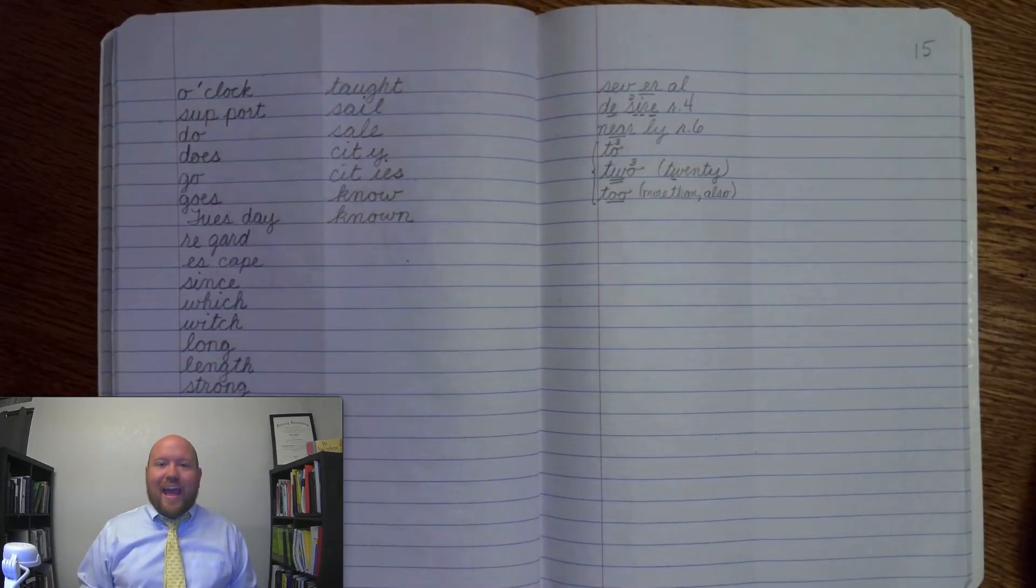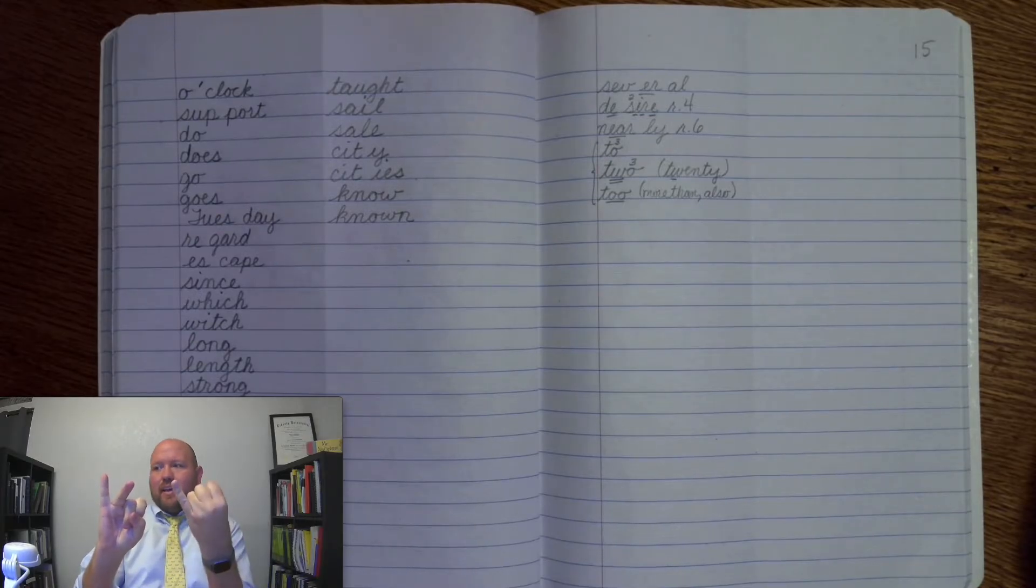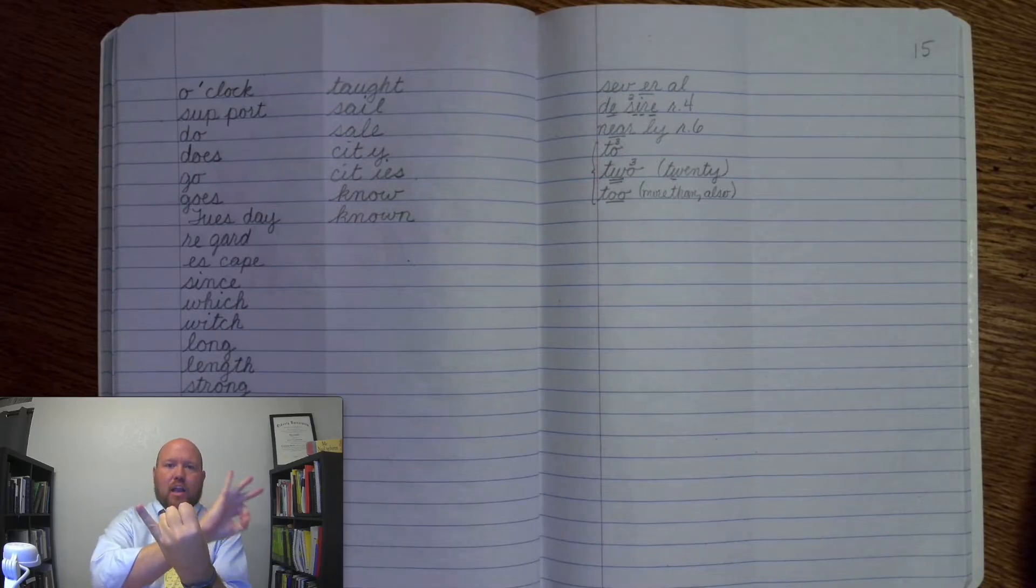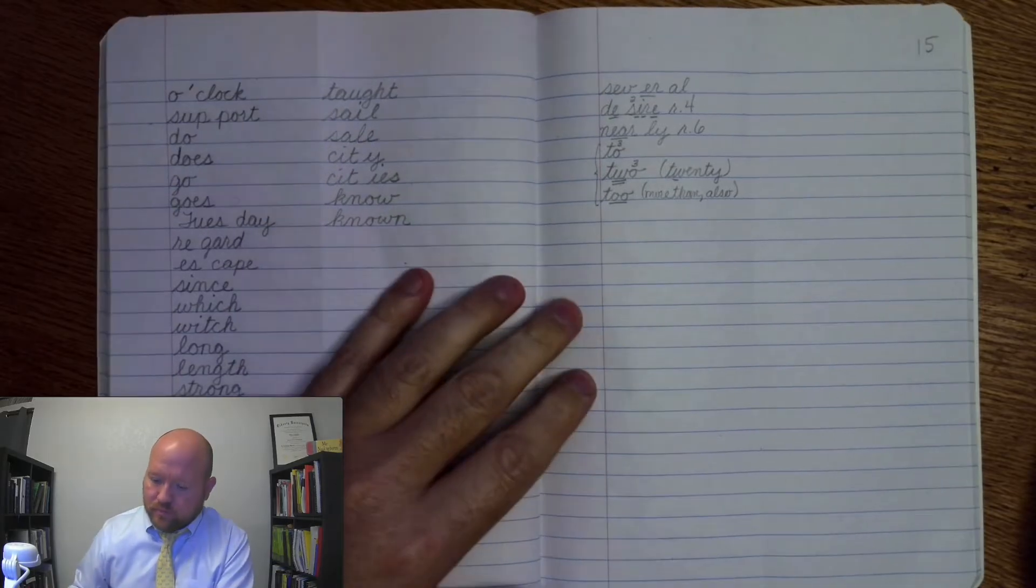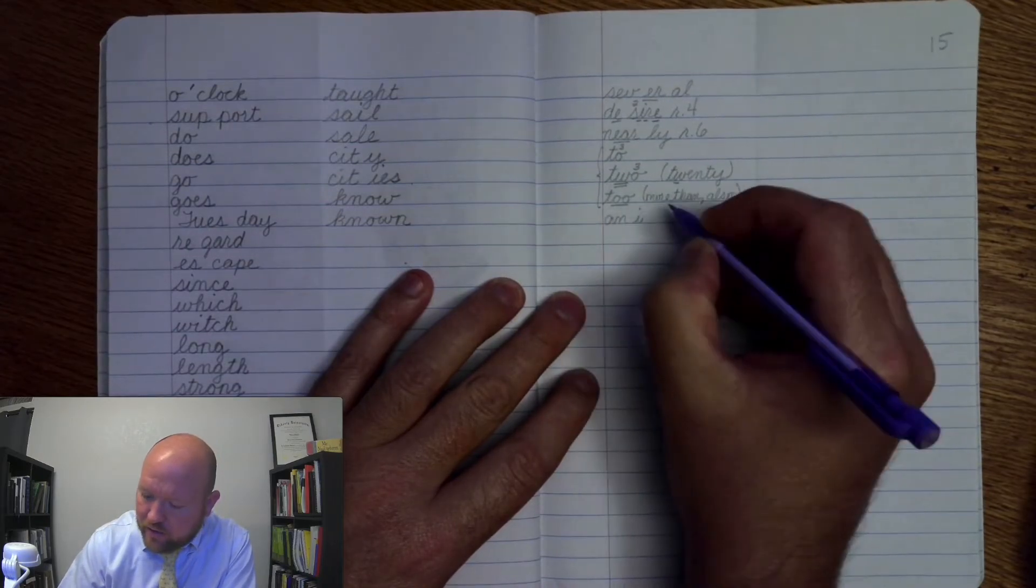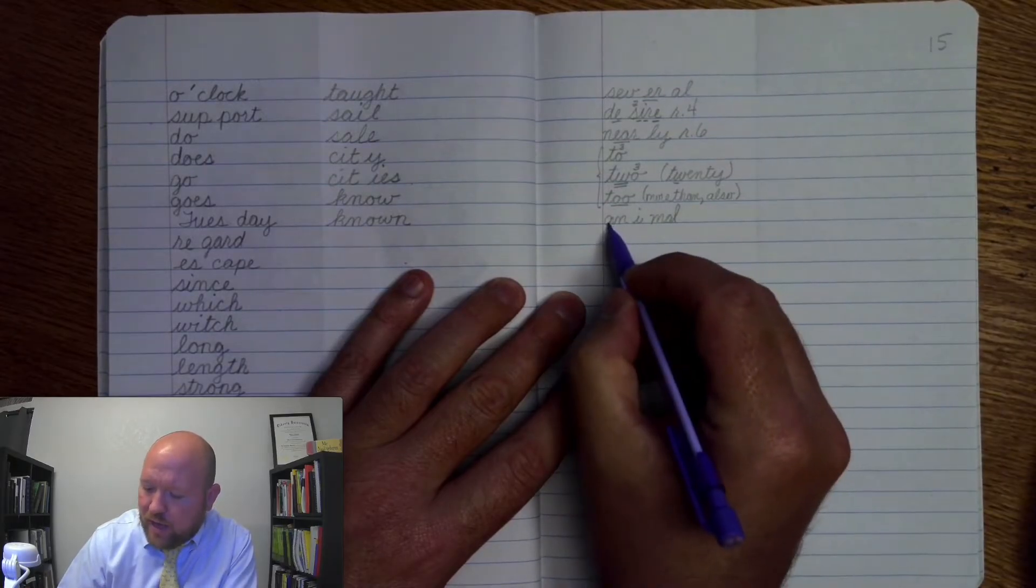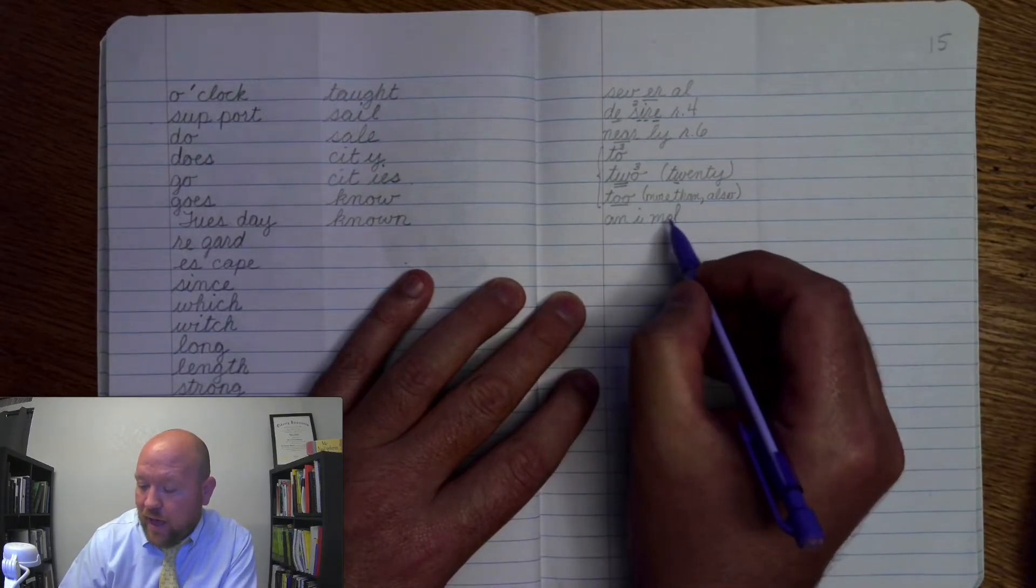The next one is the word animal. Animal. An-i-mal. A-n-i-m-a-l. Animal. Markings: A-n, once, i, once, m-a-l, once.